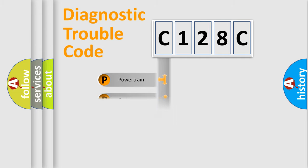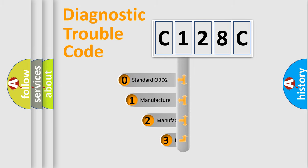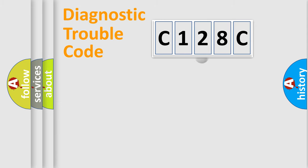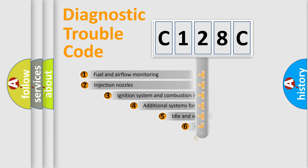Powertrain, body, chassis, network. This distribution is defined in the first character code. If the second character is expressed as zero, it is a standardized error. In the case of numbers 1, 2, 3, it is a car-specific error.